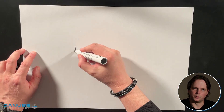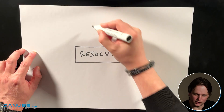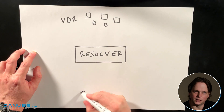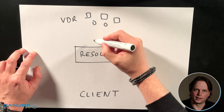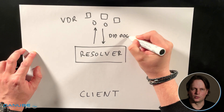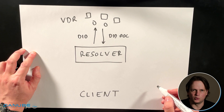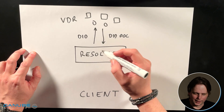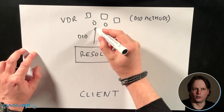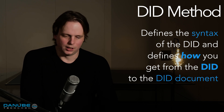Looking at the architecture of DID resolution, there are basically three components that matter. There is of course the DID resolver. Then there are the verifiable data registries where the DIDs really exist. And then there are clients which invoke the DID resolver. The job of the DID resolver is to resolve the DID and look up the associated DID document. There is a lot of diversity there, and this is really where the superpower of DIDs and DID resolution lies. There is an abstraction layer, and it is really up to the individual DID methods to define how that works. The DID method defines the syntax of the DID and defines how exactly you get from the DID to the DID document.